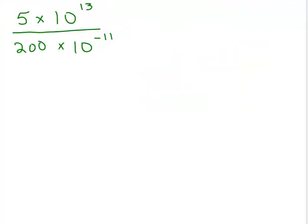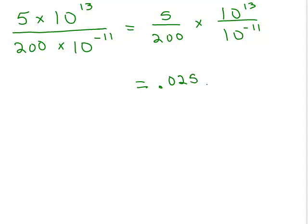Here's our next problem. We've got 5 divided by 200 times 10^13 over 10^(-11). You can use your calculator to do 5 divided by 200, and that is 0.025, and then I'm going to use my law of exponents here. Same base, you subtract the exponents. I have 13 minus what's at the bottom, minus -11 is 13 plus positive 11. Remember, if it's -11 in the denominator, positive 11 in the numerator.